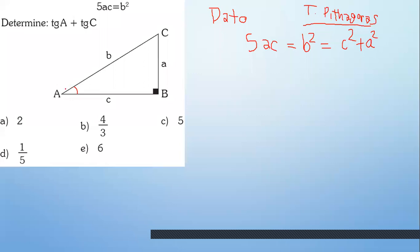Tangente de A: ubica el ángulo A, el vértice A. Tangente es opuesto sobre adyacente. Lo voy a escribir así: A sobre C. ¿Y la tangente de C qué sería? Ves el ángulo C de acá, opuesto sobre adyacente.